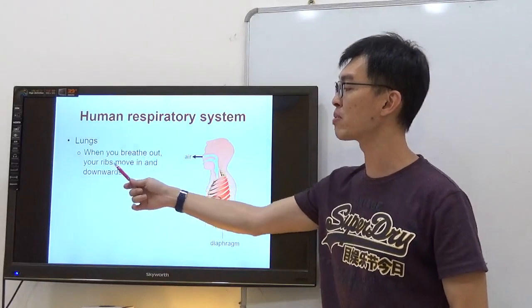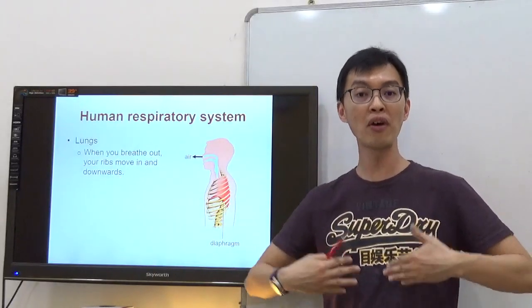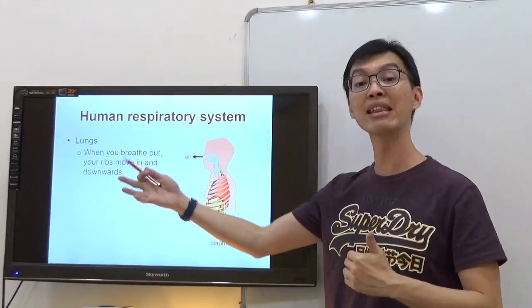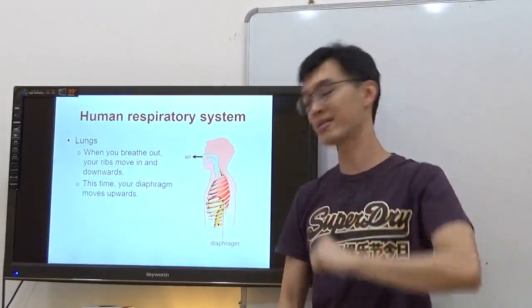When you breathe out, your ribs move in and downwards - the opposite of out and upwards. The diaphragm moves upwards.